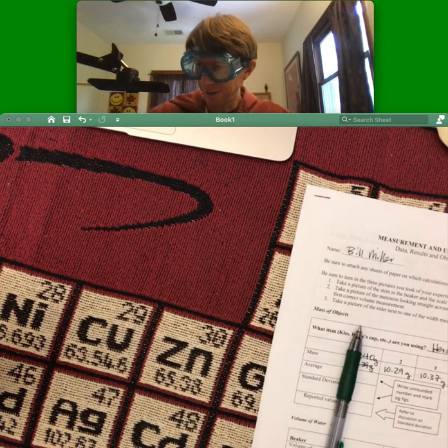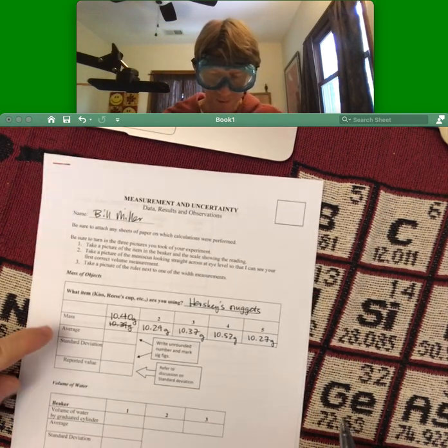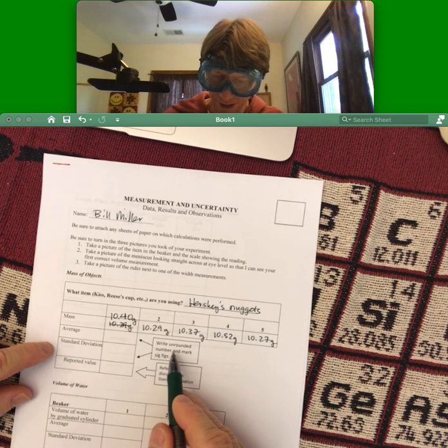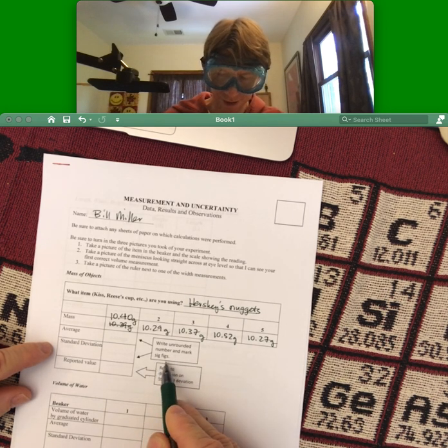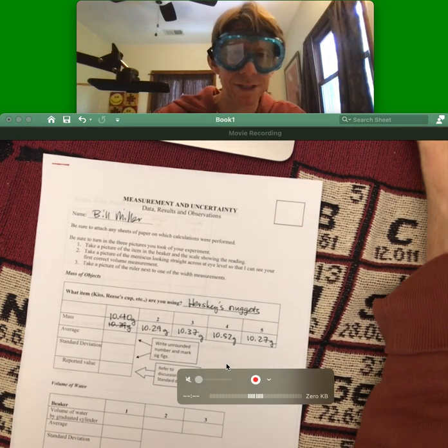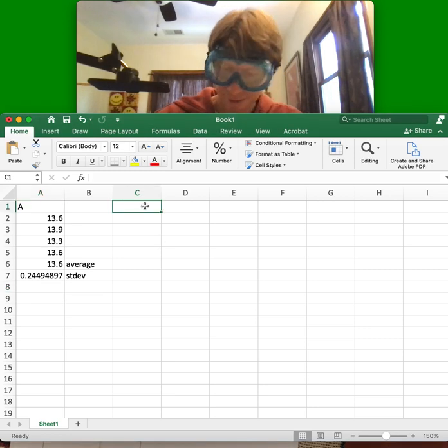And now, let's do the average and standard deviation. And it says, write unrounded number and mark sig figs on it, so we'll do that. I'm going to go back to my Excel spreadsheet. And this time, I'm going to do it for nuggets.